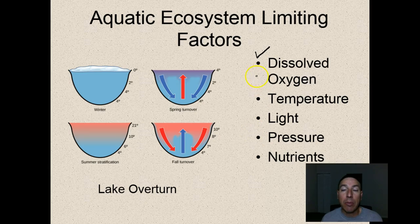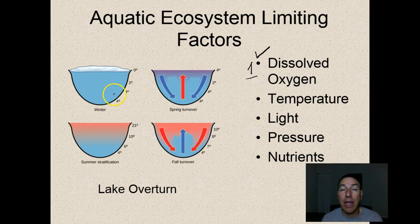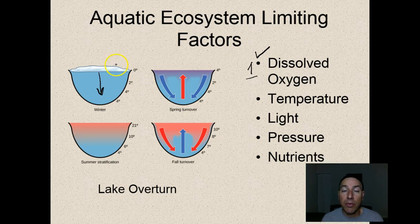All these things are major limiting factors, but remember oxygen is number one. In lakes, nutrients can sink to the bottom and get stuck there for quite a while. One thing that does happen in lakes - especially in northern climates - is what we call lake overturn. During winter in northern climates, the pond or lake freezes over on the surface, making the surface the coldest part. Water is most dense at 4 degrees Celsius, so as you go down it actually gets warmer, which is quite different from summer.